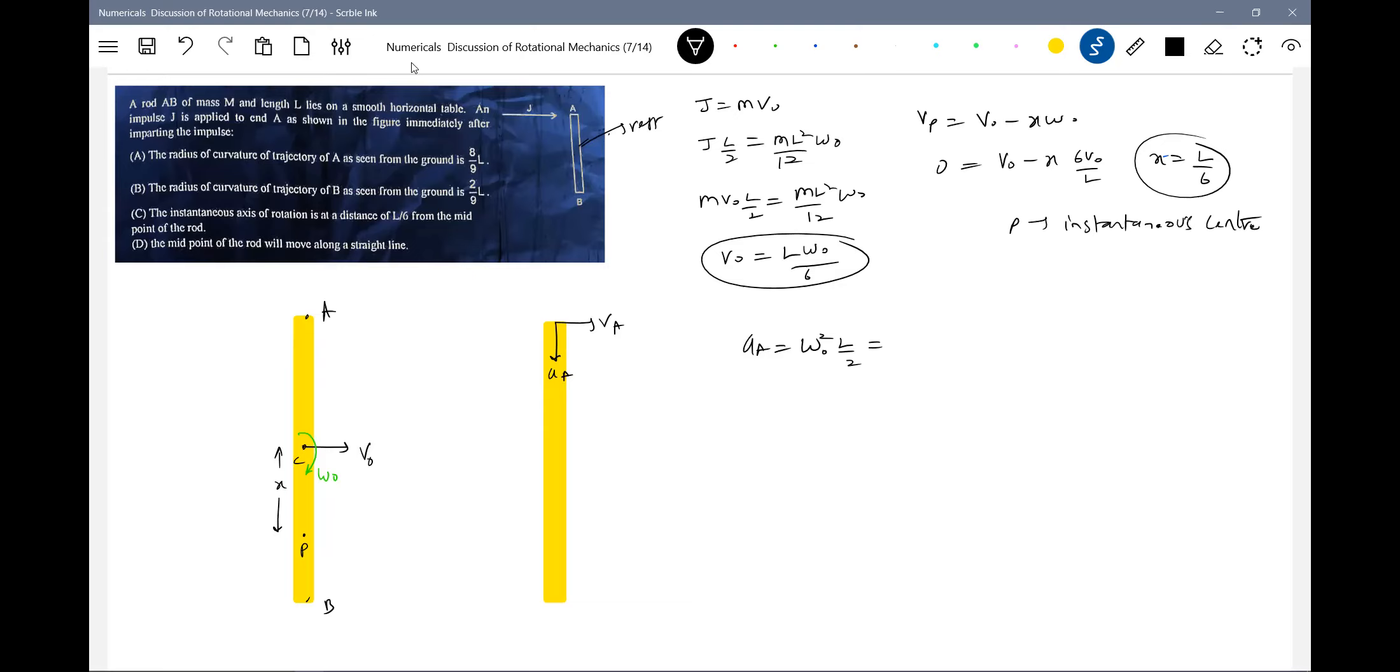Omega naught I think we should bring in terms of everything. Omega naught is 6 v_naught by l, all square, this is l by 2. Further v_naught, what we can write? V_naught, okay, let me write in terms of v_naught only. This will be 36 by 2, which is 18. So 18 v_naught square by l - this is the acceleration.